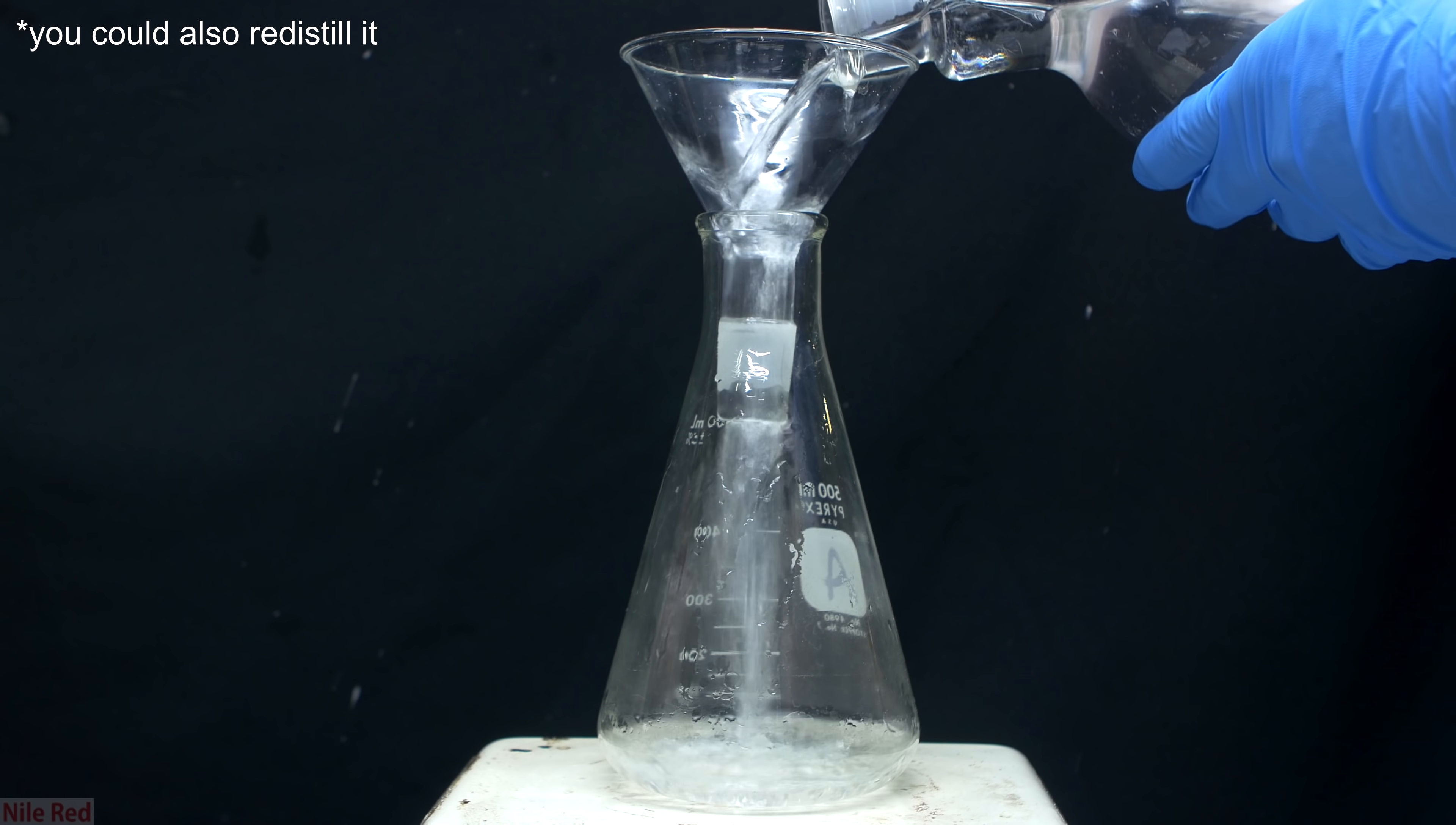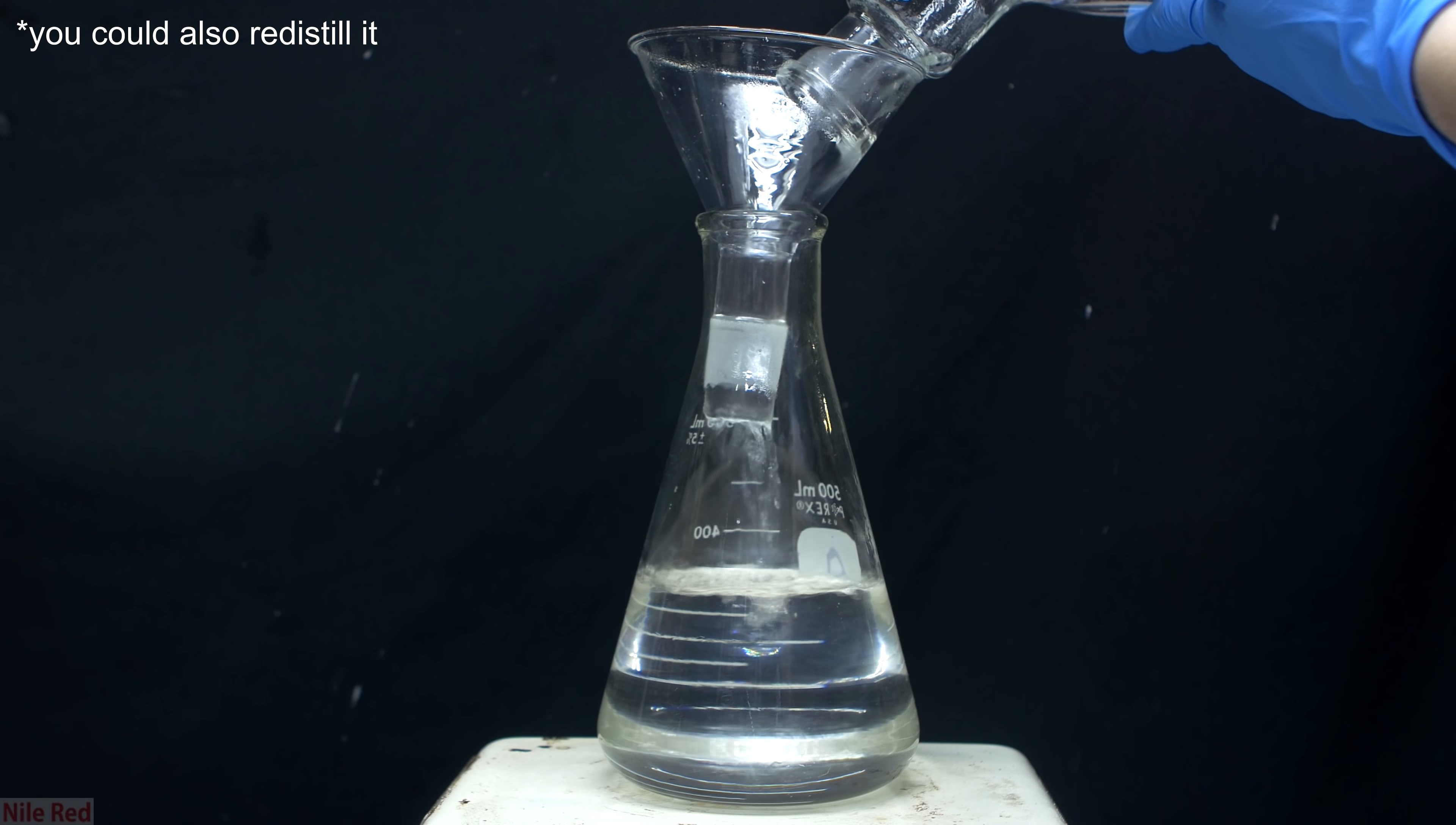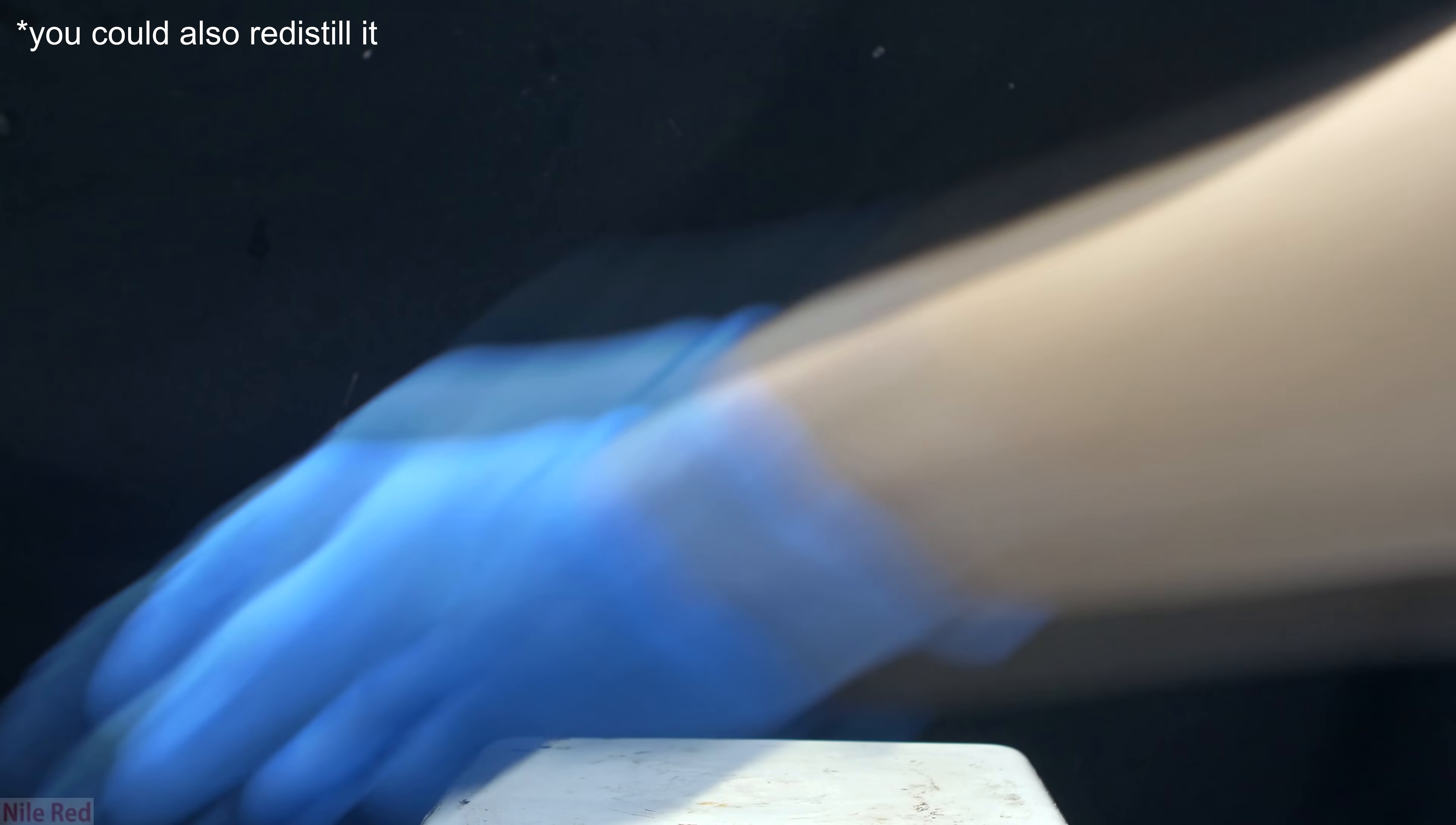Once everything had cooled, I poured off the toluene into an Erlenmeyer flask, and I actually saved this toluene for the specific purpose of drying more oxalic acid. If you don't want to throw it out, I really wouldn't recycle it in new reactions, because even though the oxalic acid isn't very soluble in it, it still is going to contain a little bit of oxalic acid.